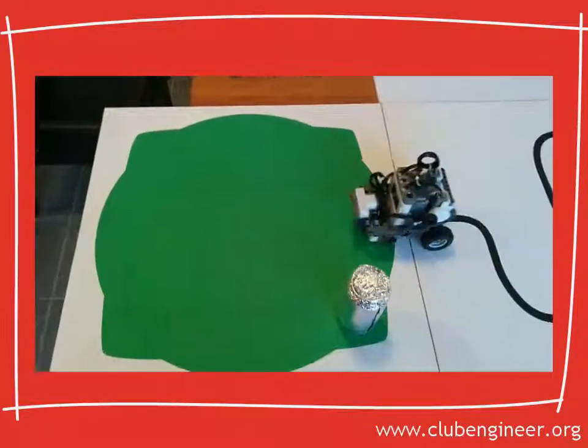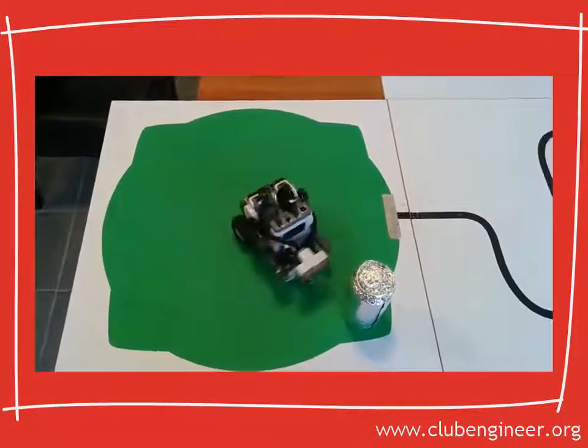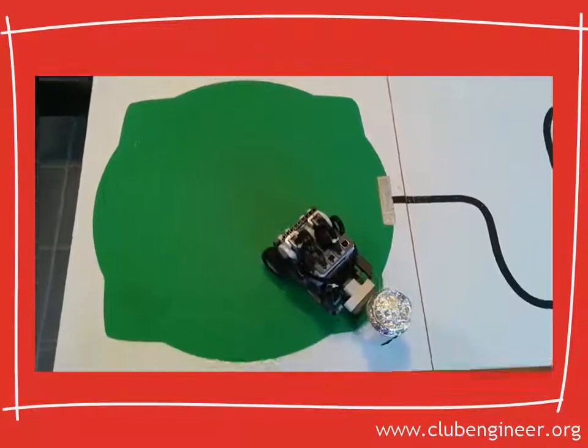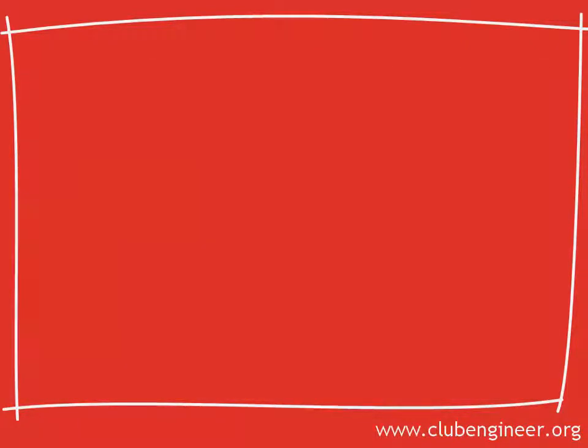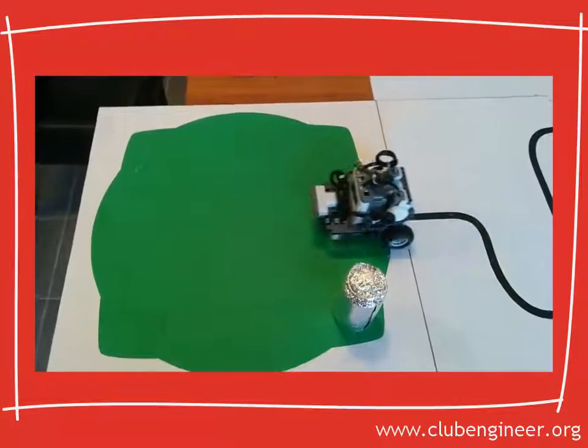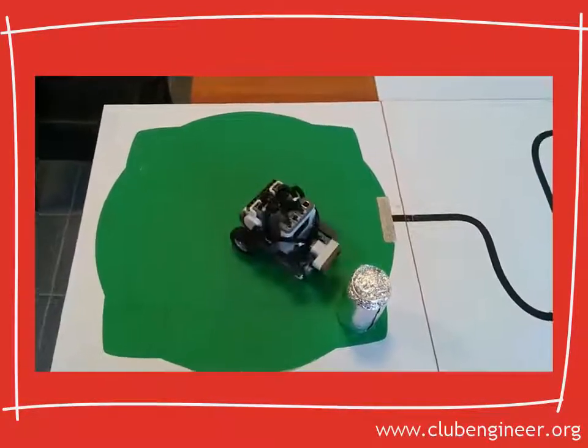The next task now is to get the robot to move forward, pushing the can off the chemical spill, and then stopping when the can is off the green. The way we can do this is to set the robot's motors running forward, but keep checking the light sensor, looking for white.